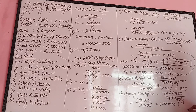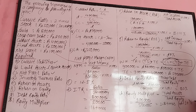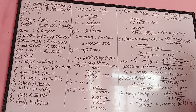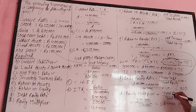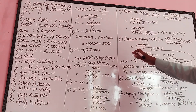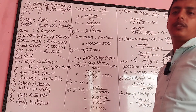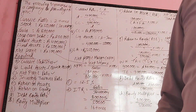Also, equity multiplier equals 1 plus debt-equity ratio. That is 1 plus 0.8 equals 1.8. This confirms the formula.